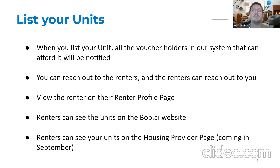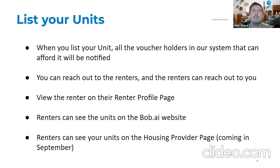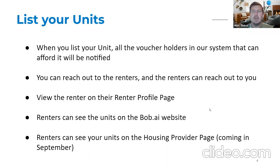We will go through renter profiles in much more detail in the next workshop, Workshop 3, so you'll see what the renter can put in and how to know what's the best renter for you. They can see all the units on the housing provider page, which will be available in September. One thing you may notice: when you list the unit there isn't an option to add a picture. We are adding that option early next week, so from next week you should be able to list pictures to help explain to the renter what the unit looks like.